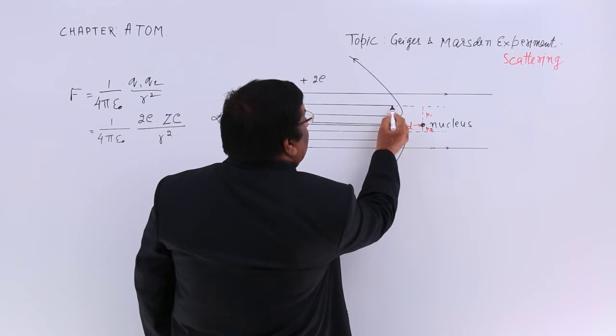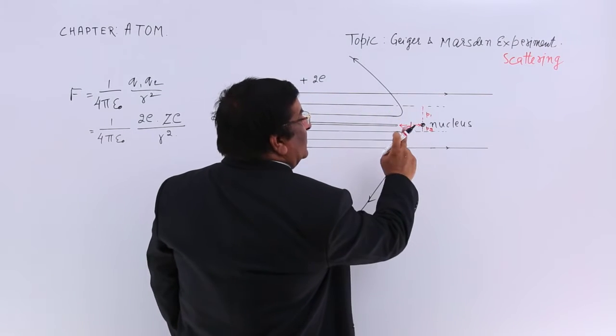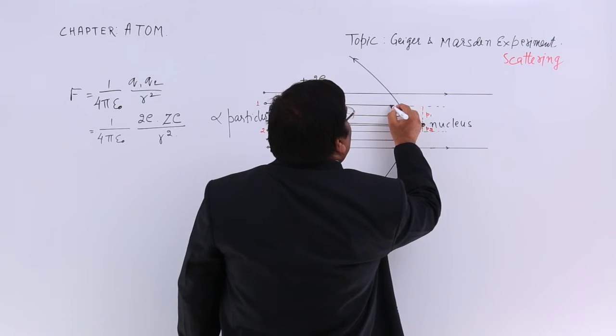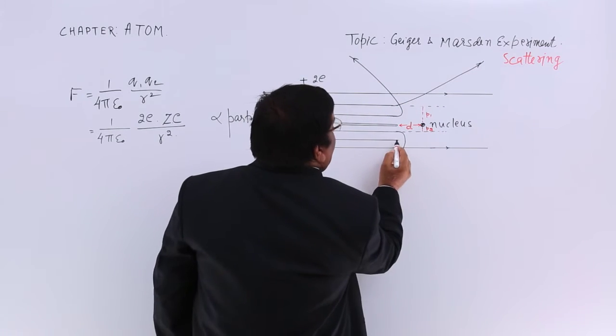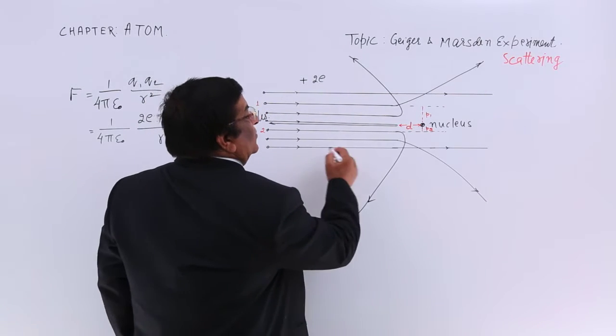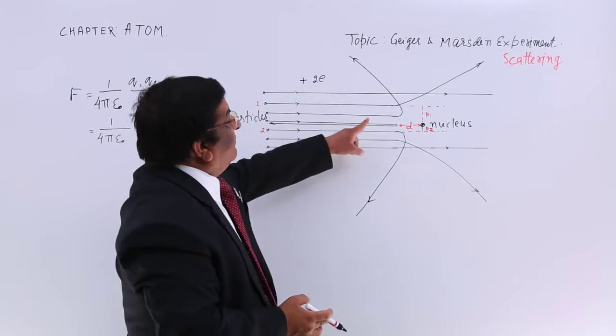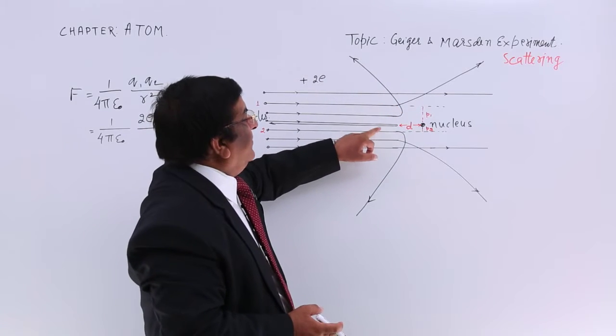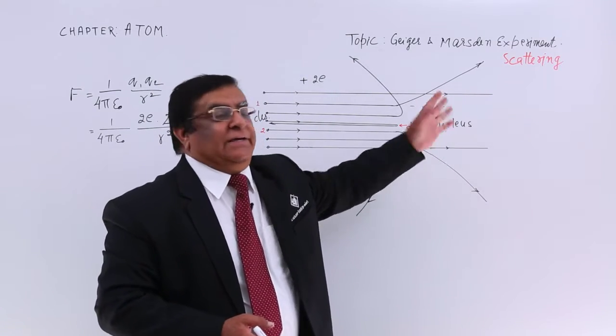Now this alpha particle which is slightly away than this will experience less force. Because of the less force the deflection is less and it goes this way. This one is far away and that goes straight without deflection. This is how things are scattered. The one which is closer is deflected more. The one which is slightly away is deflected less and one which is far away is going undeflected.